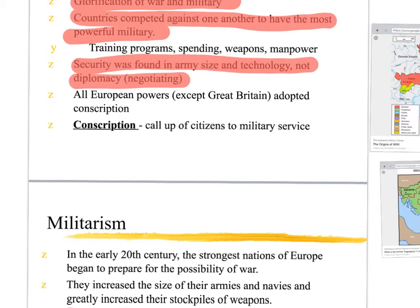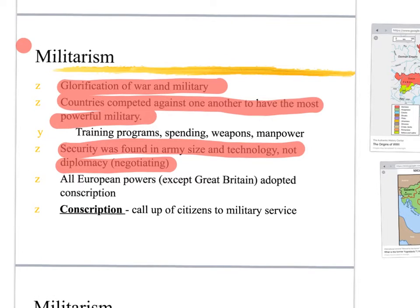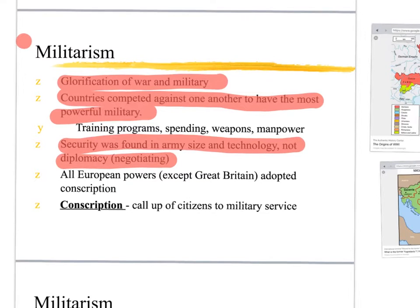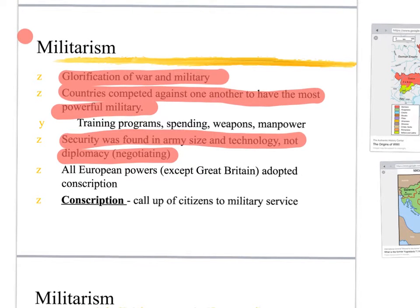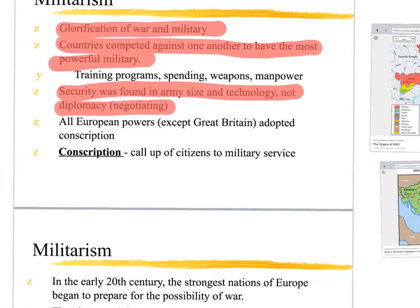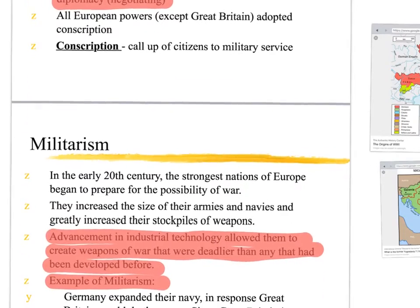That's why World War I was at first called the war to end all wars — because people thought there will never be a war equally as bad as this, except 20 years later when a much worse one breaks out. But at the time it was very catastrophic. People were finding new weapons technology, building their military, having a strong military, a strong navy — that's how they took their comfort.